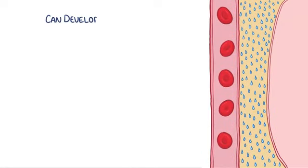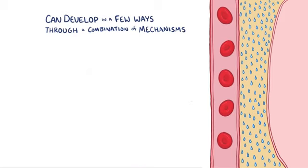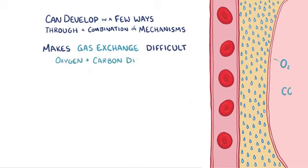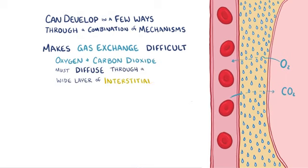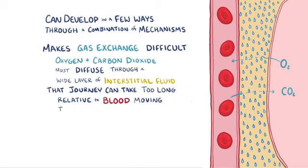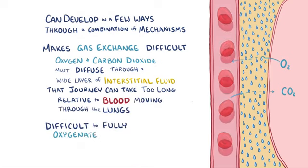Pulmonary edema can develop through a combination of mechanisms. It makes gas exchange difficult because oxygen and carbon dioxide have to diffuse through a wide layer of interstitial fluid to get from the alveoli to the pulmonary capillary and vice versa. That journey can take too long relative to how quickly blood moves through the lungs, and that makes it hard to fully oxygenate the blood.